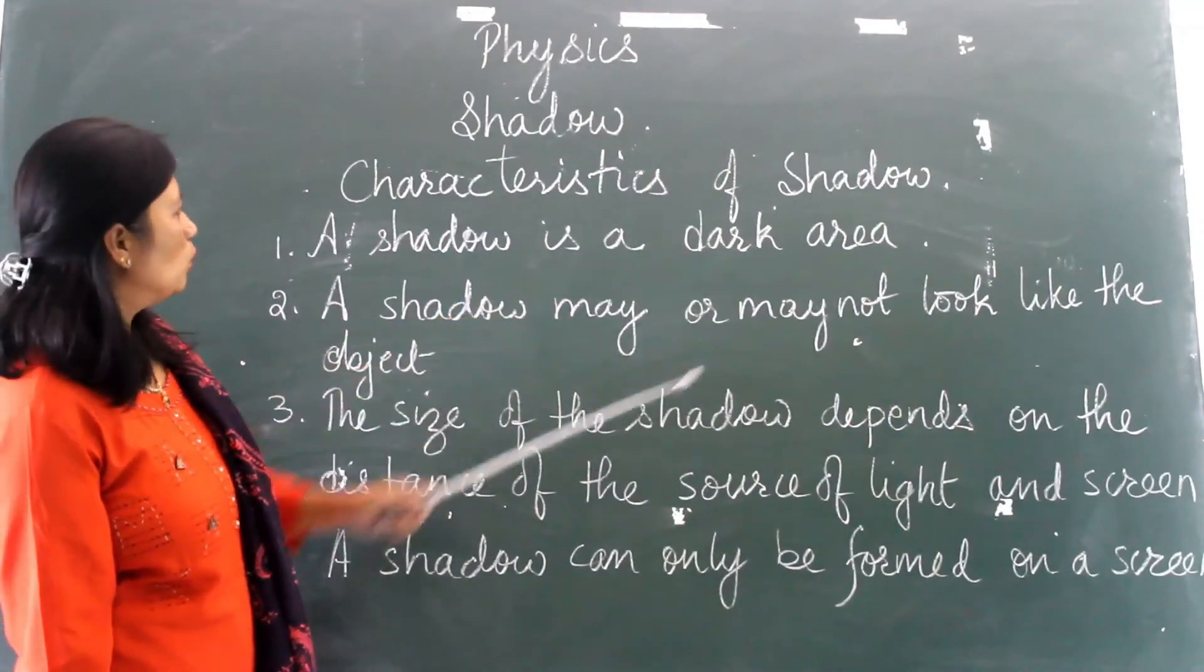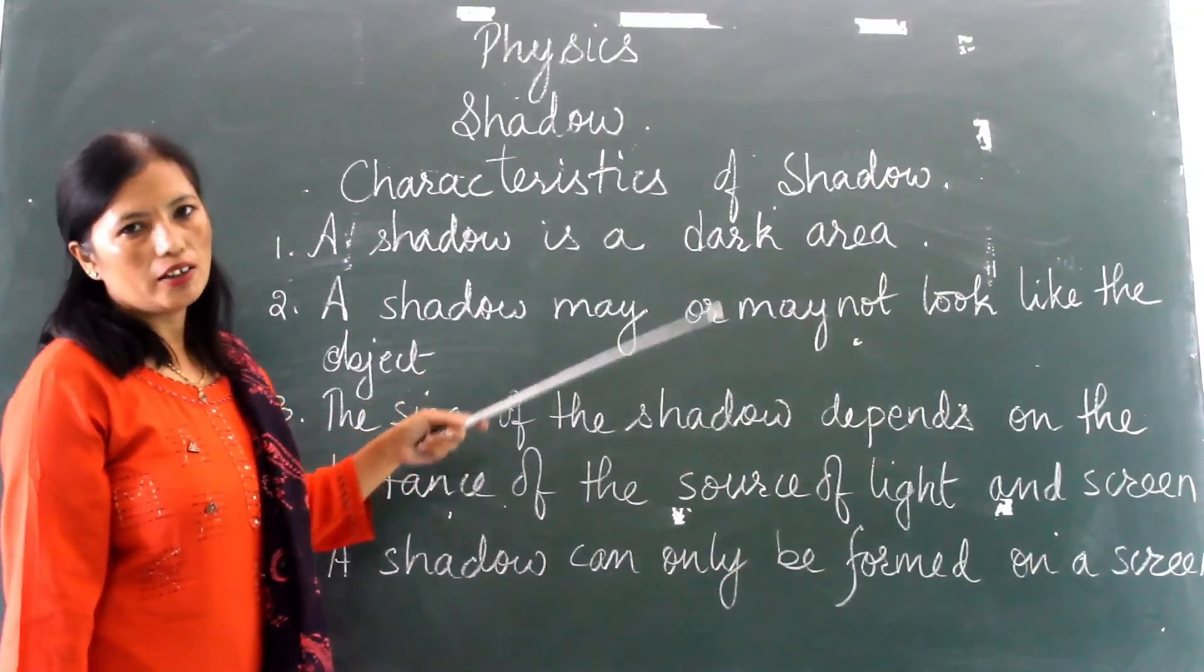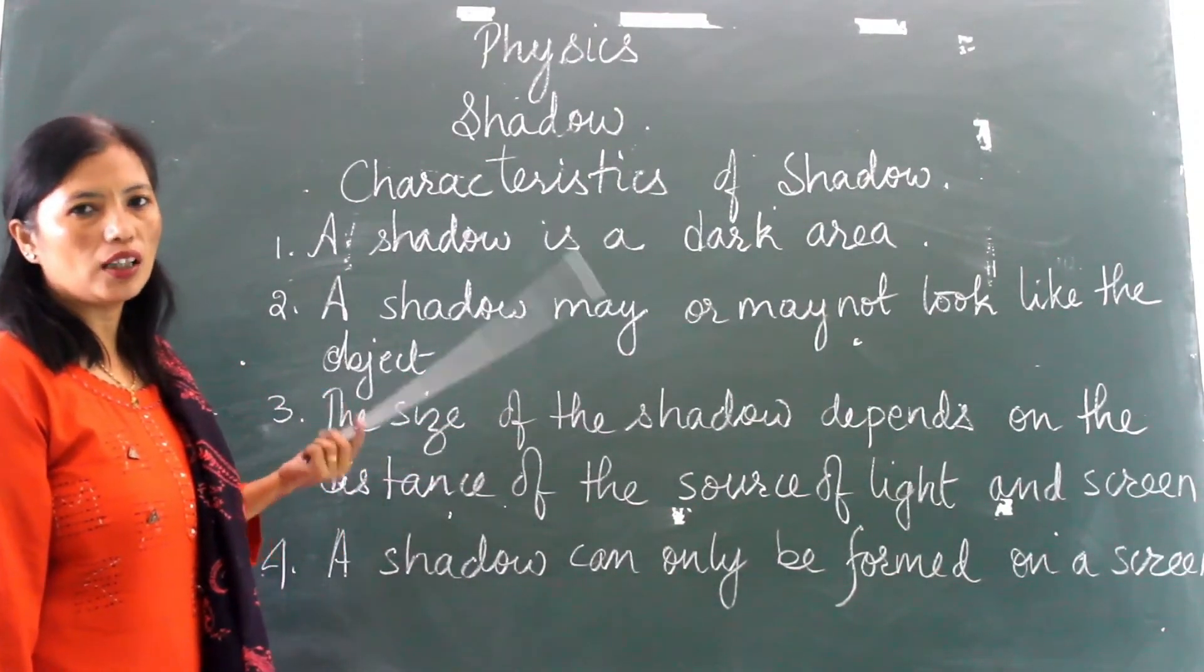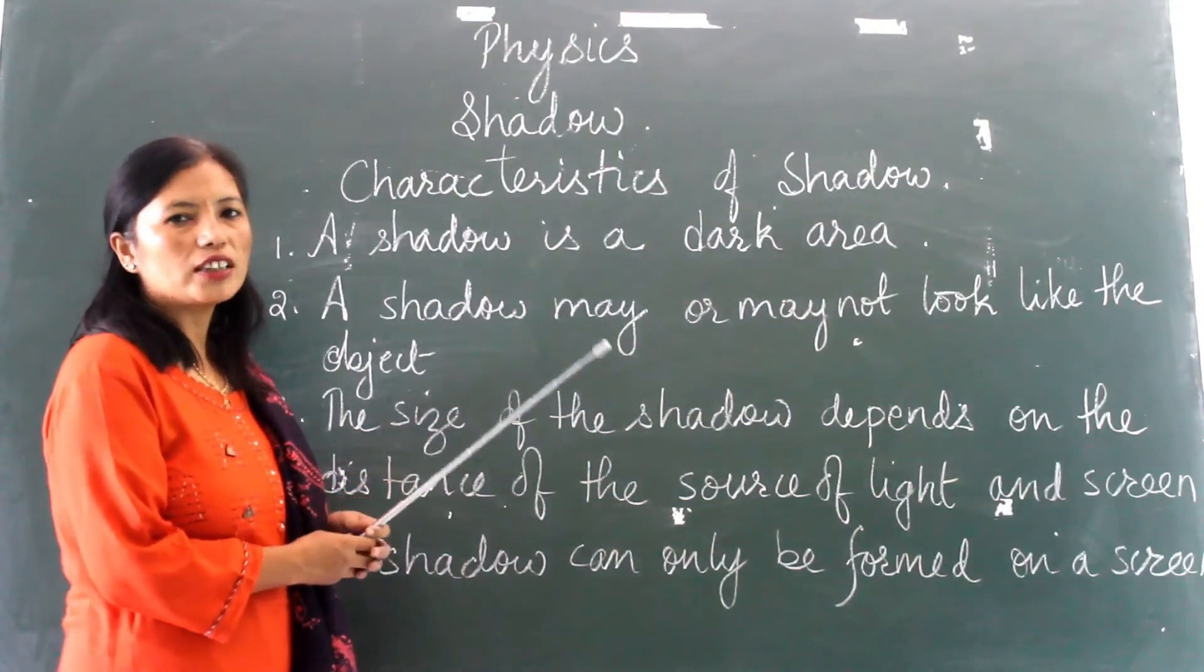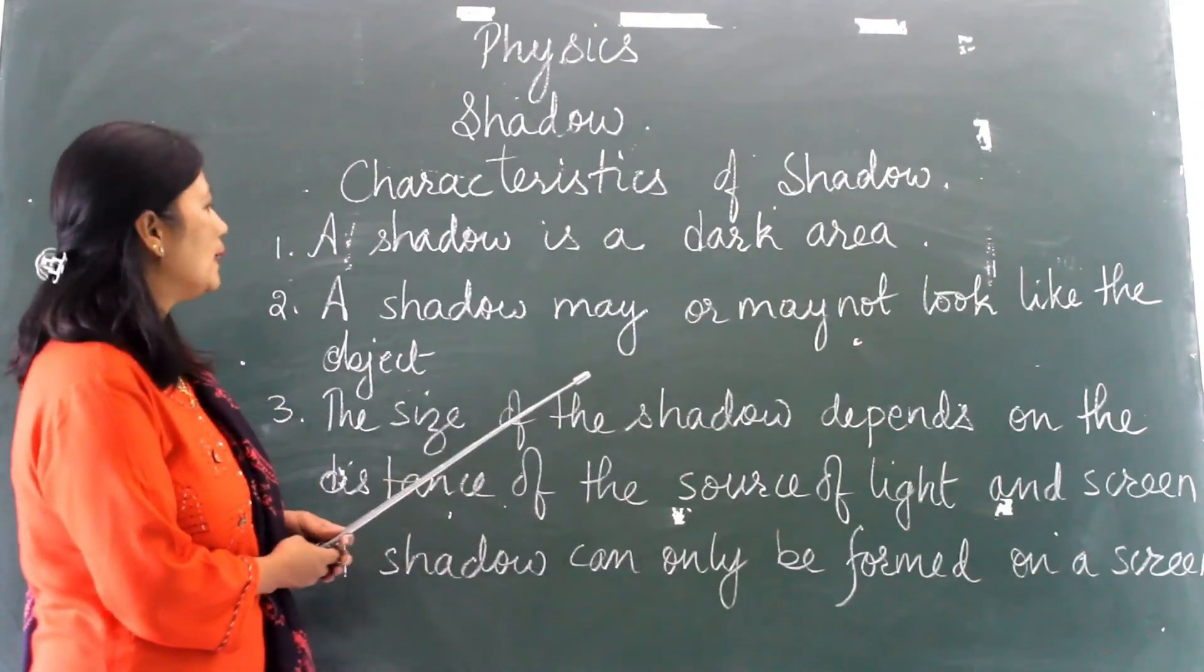Characteristics of shadow. A shadow is always a dark area. You cannot see the color of the shadow. There is no color. It's always dark. Whether the object is in any color, the shadow will always be dark.